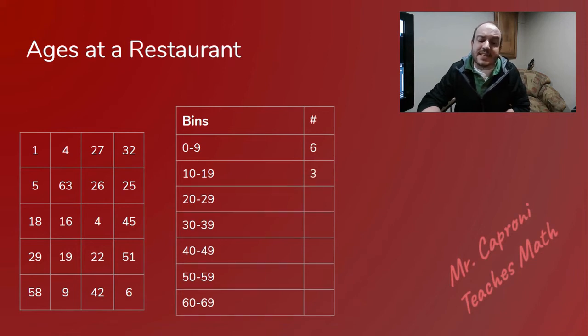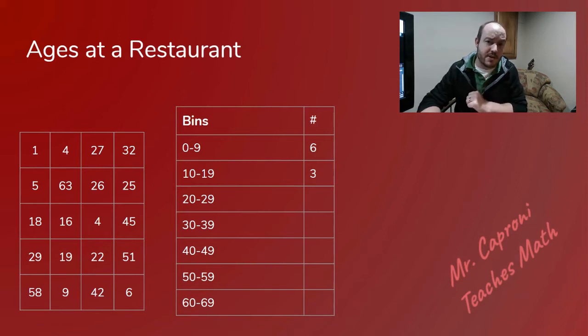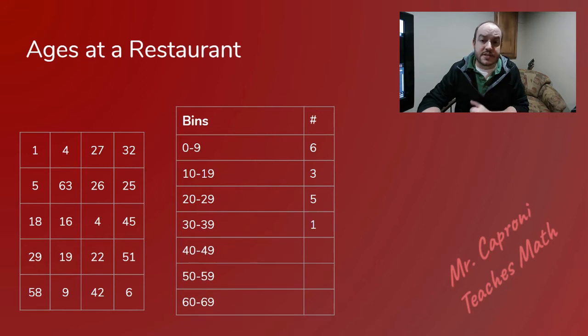We can continue this to find all of our other bins. For example, from 10 to 19 we have the 18, the 16 and the 19 for a total of three people that fell into that bin. And we can continue doing this with all the others until we fill up our entire chart.